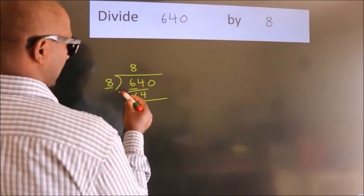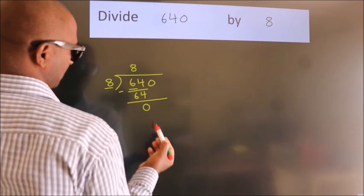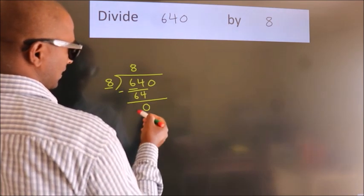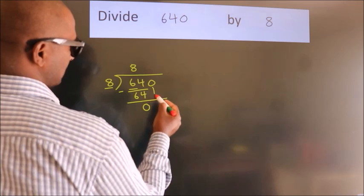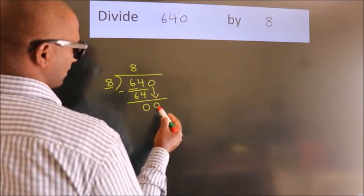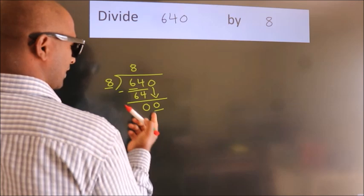Now we should subtract. We get zero. After this, bring down the next number, so 0 comes down. Zero. When